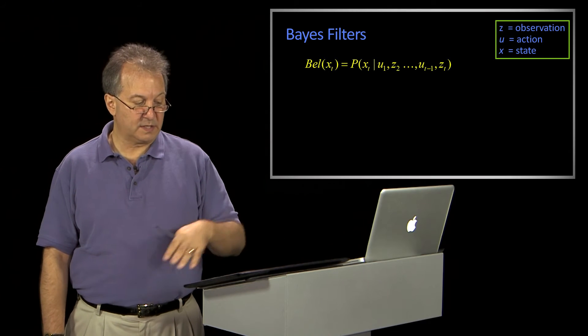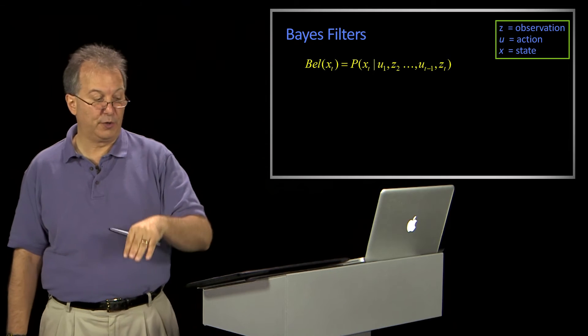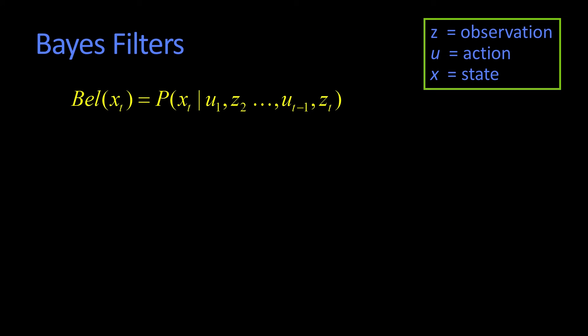What I want to do is work through the slides here on the Bayes filter, getting us to how we come up with our new belief. So this was just our definition before, that the belief is the probability about the current state, given everything, including the current measurement.